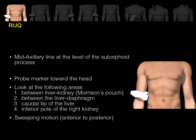The right upper quadrant view. Place the probe in the mid-axillary line at the level of the xiphoid process, keeping the marker towards the patient's head. The points of potential fluid accumulation are between the liver and the kidney — the Morrison's pouch — between the liver and the diaphragm, the caudal tip of the liver, and the inferior pole of the right kidney. Evaluate these areas using an anterior to posterior sweeping motion.